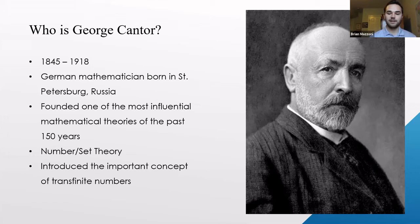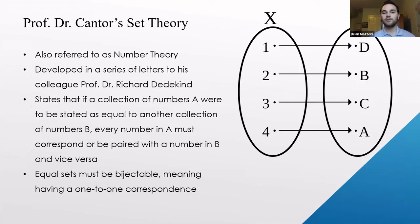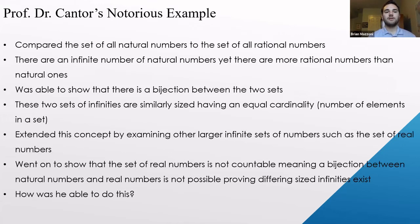Cantor's set theory, developed in letters to colleague Professor Richard Dedekind, states that if two collections A and B are equal, every number in A must correspond to a number in B — they must be bijective, meaning one-to-one correspondence. His famous example compared the set of all natural numbers to the set of all rational numbers: natural numbers are whole numbers like 1, 2, 3, while rational numbers are fractions. He showed a bijection exists between these sets by theoretically listing every rational number in a grid and assigning a natural number to each entry.